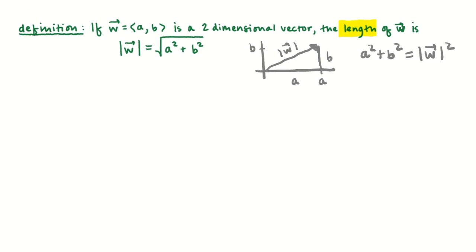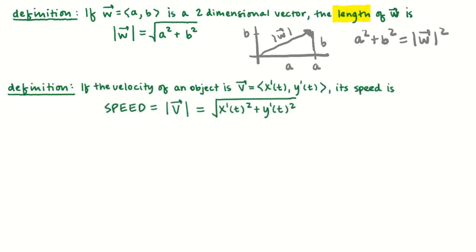In AP Calculus, we don't need a lot of vector arithmetic beyond what's necessary for the course. But we are interested in taking the absolute value of the velocity vector because that gives us speed. Last semester, when an object moved along a straight line, the absolute value of velocity was speed. So for the vector case: if the velocity vector is given by (x'(t), y'(t)), then speed is the square root of x'(t)² plus y'(t)².